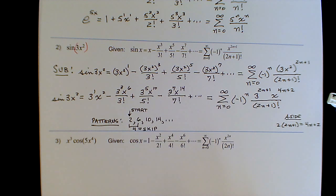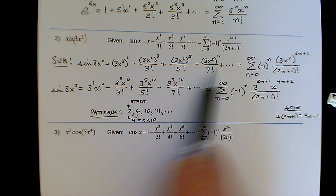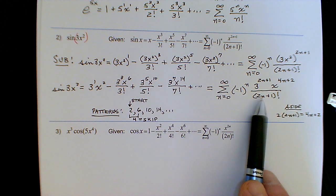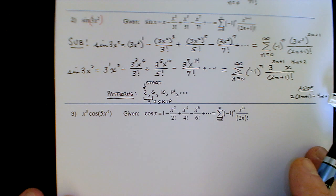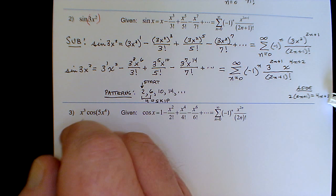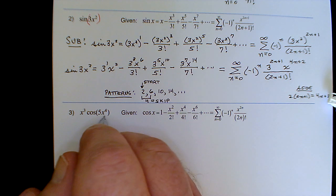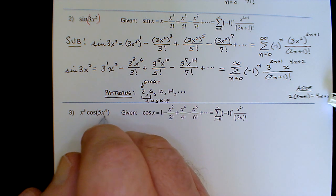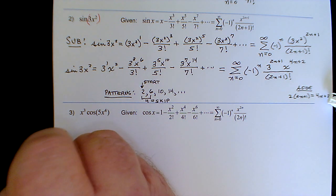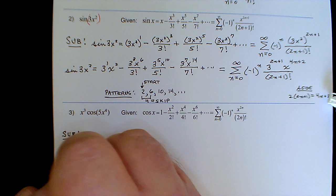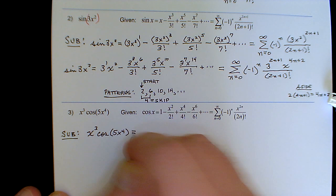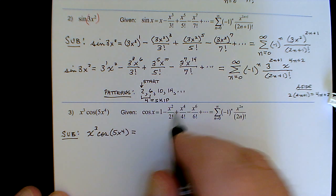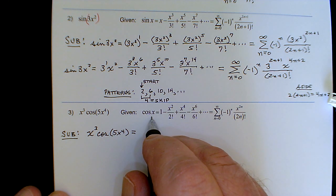The reason I'm showing the polynomial representation is so you understand what's legal and what's not legal, and the next example will illustrate that. This is x cubed times cosine of 5x to the 4th — the 5x to the 4th is the argument belonging to the cosine. Making the initial substitution, the x cubed hangs out in front for now. Just as in the previous examples, 5x to the 4th gets substituted for x in the polynomial representation for cosine of x.